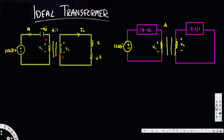The turns ratio is 4 to 1, representing N1 and N2 values. We also have to place the dots: the first dot is here and the second dot is here. Let's assume the current direction — the current flowing in this direction is I1 and this one is I2.